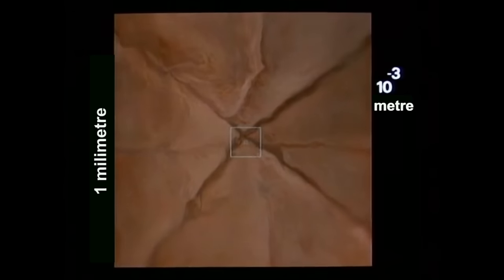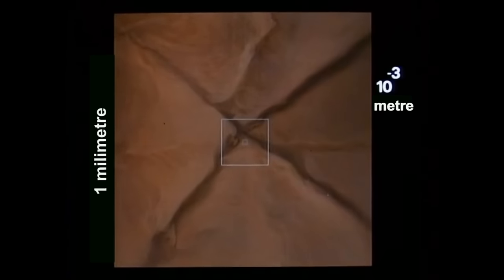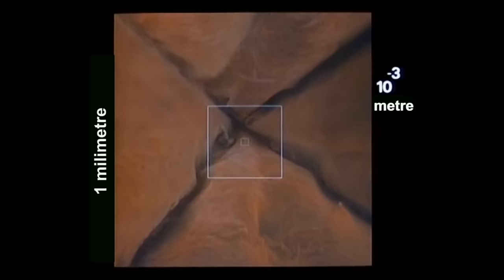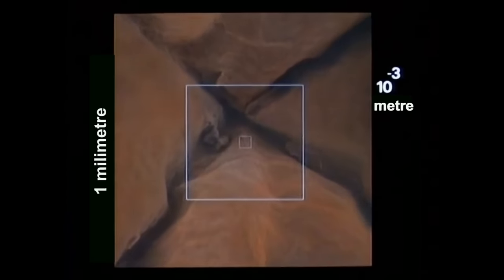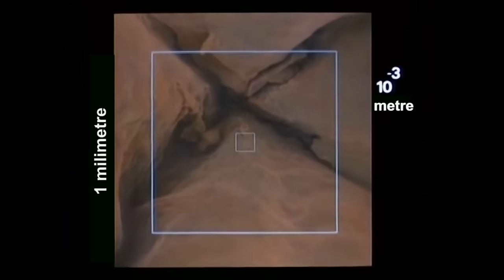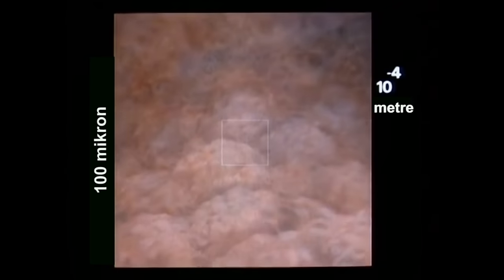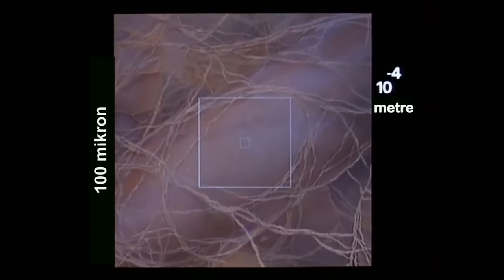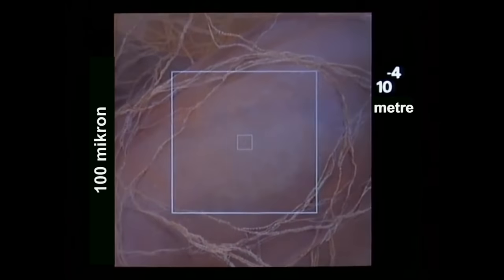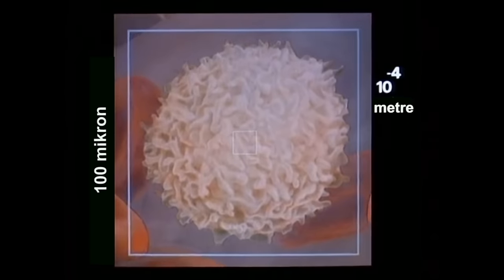Birkaç saniye içinde derinin içine gireceğiz. Dıştaki ölü hücrelerden içteki küçük damarlara katman katman ilerleyeceğiz. Karşılığında cilt katmanları yok olacak. Hücrelerin bir dış katmanı, felti kolajeni, kırmızı kan hücreleri ve kıvrımlı ak yuvarlar içeren bir kılcal damar.